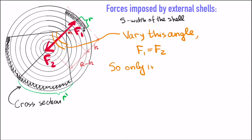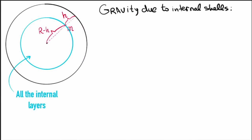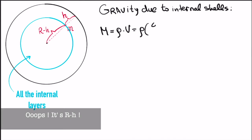Therefore, the only non-zero force on our particle comes from internal layers. Their collection represents a sphere of radius half to r-h, and our particle is at its surface. The volume is just 4 thirds pi r-h cubed.